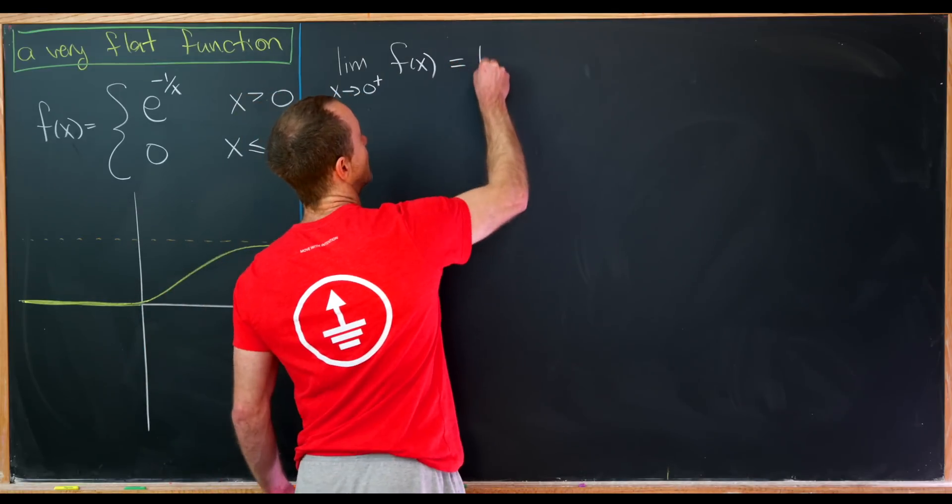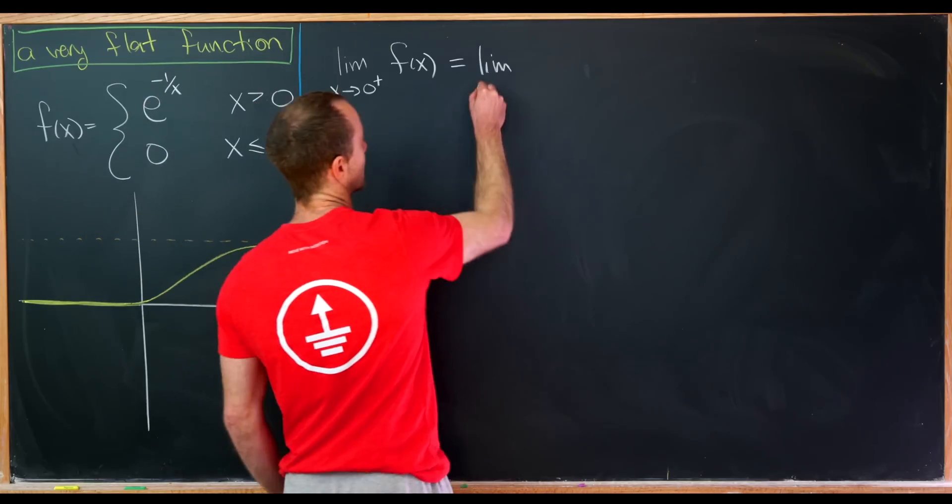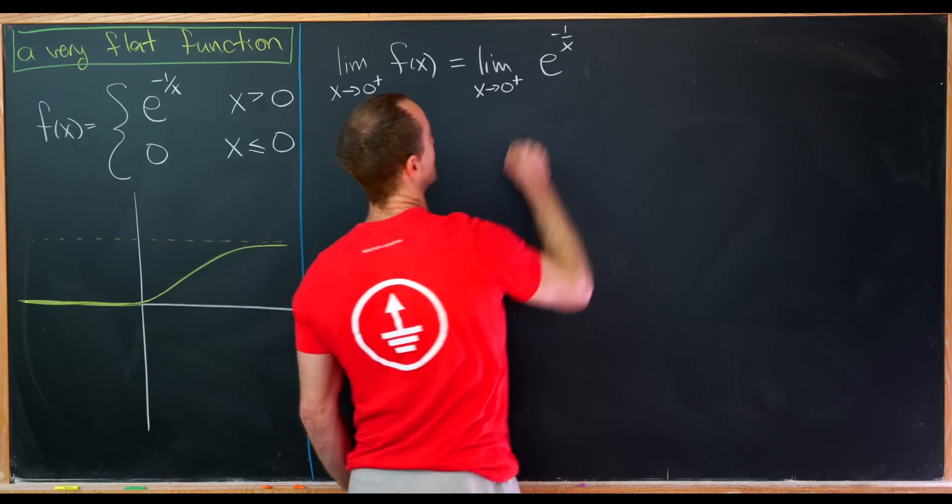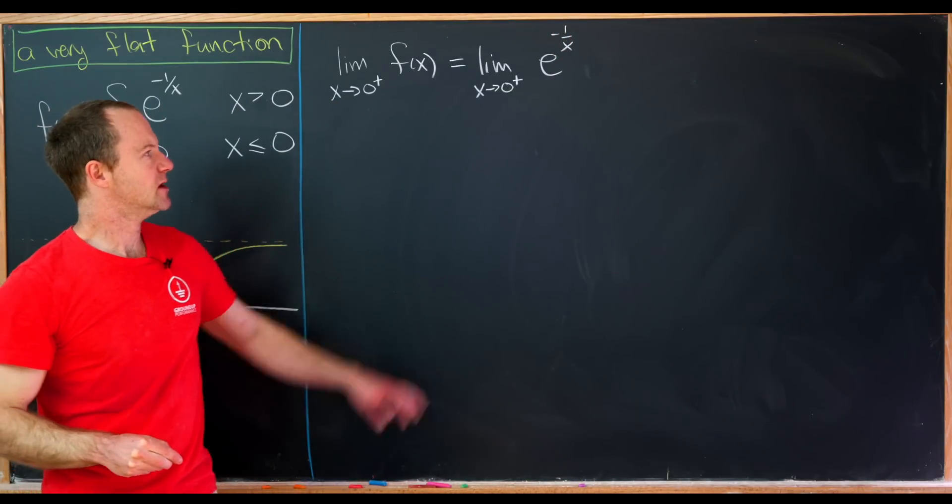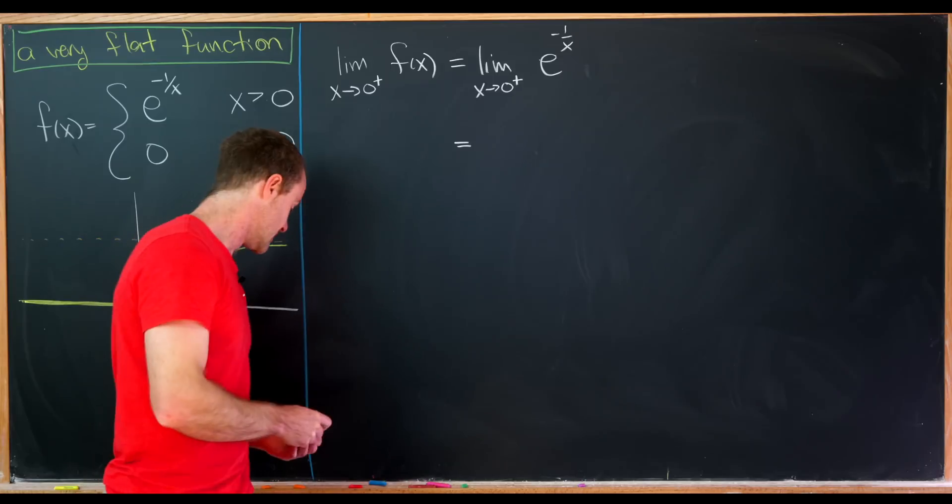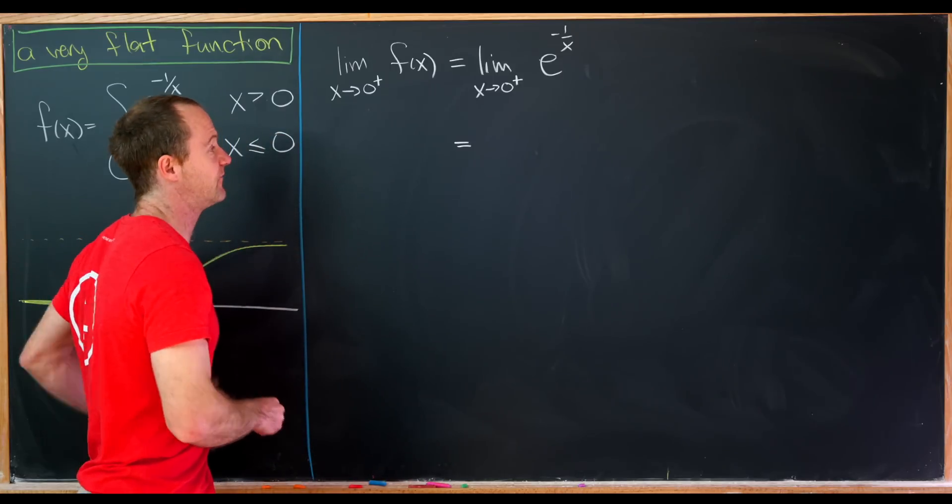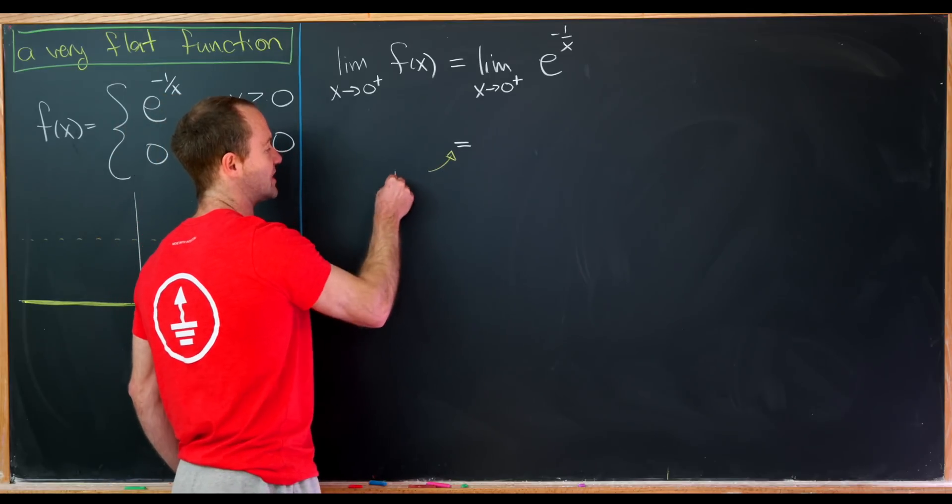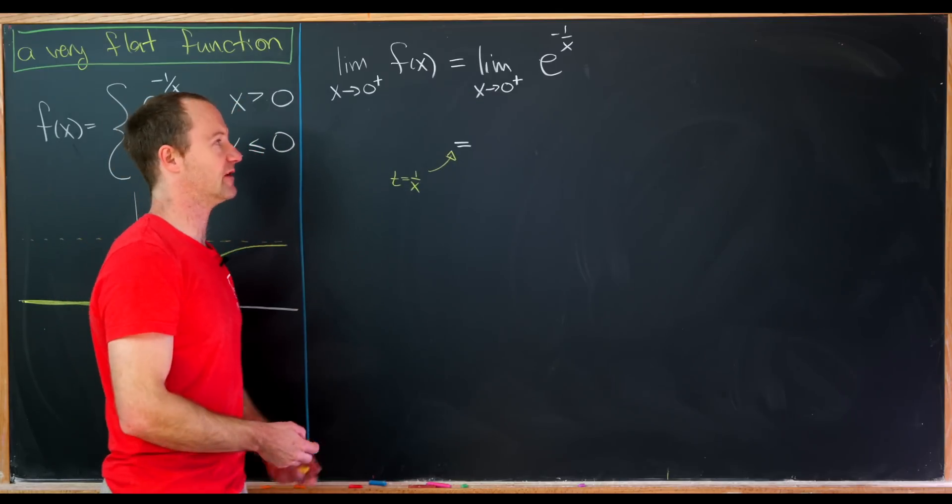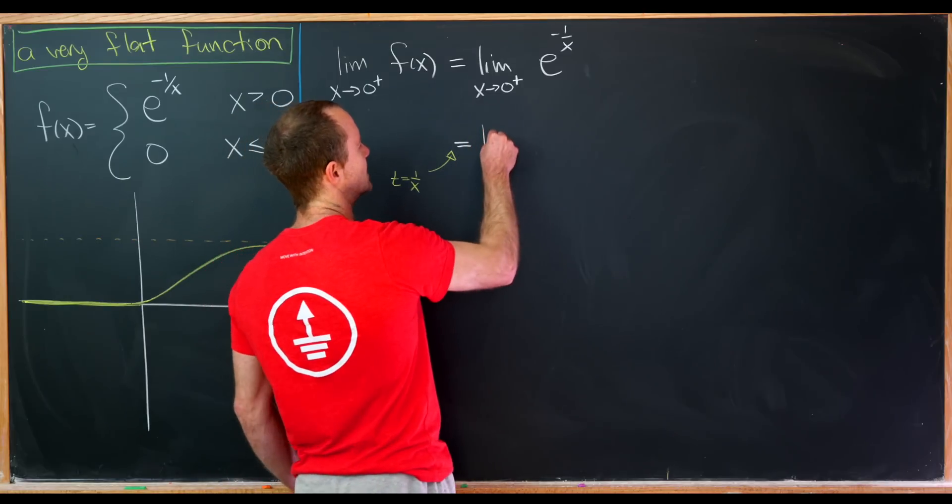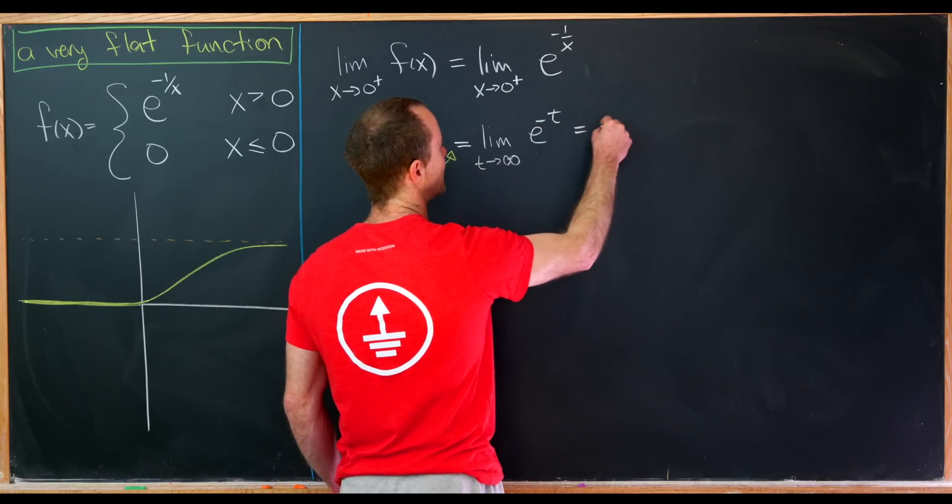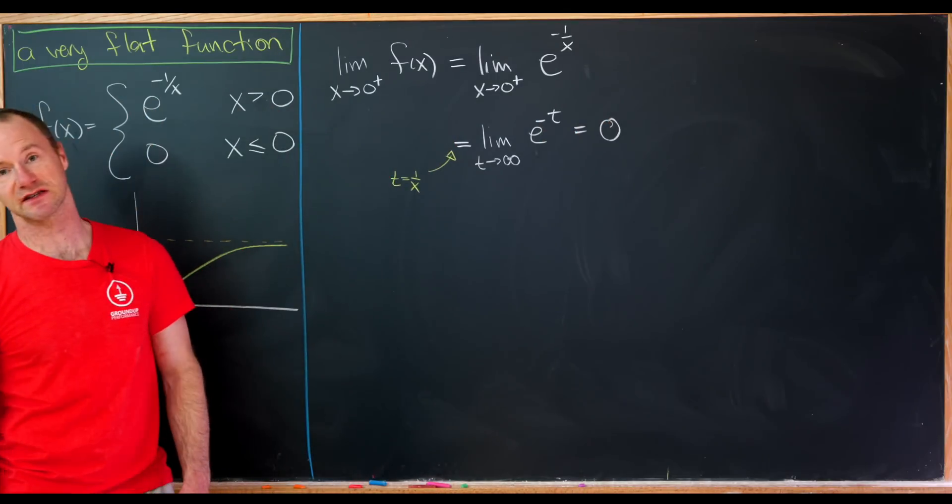So if we are above zero, then f of x takes on this top form. So we have the limit as x goes to zero from above of e to the minus one over x. But notice we can do a change of variables here, and maybe it's not super necessary in this case, but it will be helpful in a forthcoming setup. Let's change t equals one over x. But notice if x is going to zero from above, then t is going to positive infinity. So this turns into the limit as t approaches positive infinity of e to the minus t, but that's exponential decay, so that clearly gives us zero.